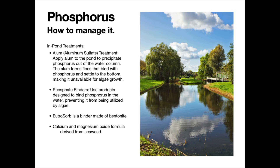Whatever binder you're working with, figure out your phosphate level to start, then test throughout the applications to see it coming down. With Utrosorb, you provide your phosphate level and they can recommend how much to use. With calcium and magnesium formulas, you start with a recommended dosage and repeat applications — we've seen numbers come down after about 12 to 16 weeks of bi-weekly applications. You need to use enough binder to match or exceed the amount of phosphorus you're trying to bind. A lot of people apply it once and think that's enough, but you've got to use enough, long enough, and often enough to see results in algae suppression.